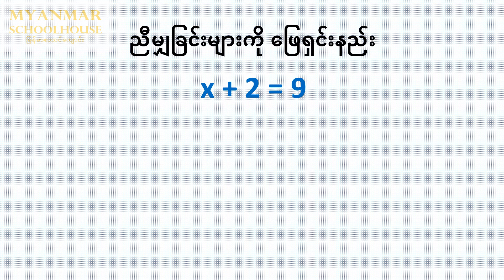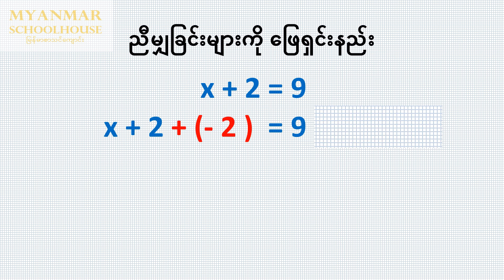Step x plus two is equal to 9. This equation gives the value of x. So if you have a function of x, then we will have a function of x to x.